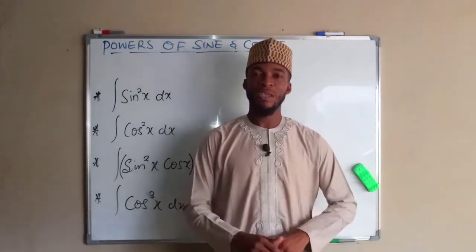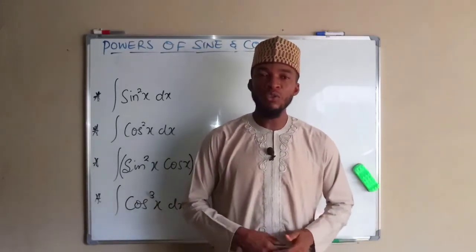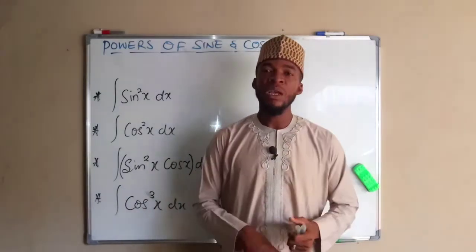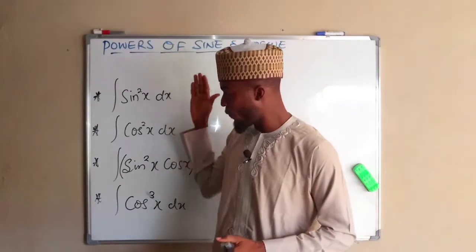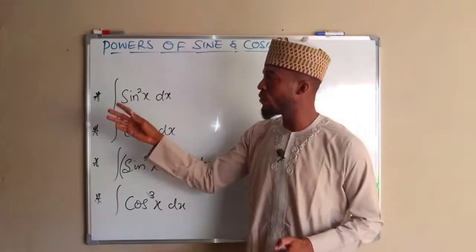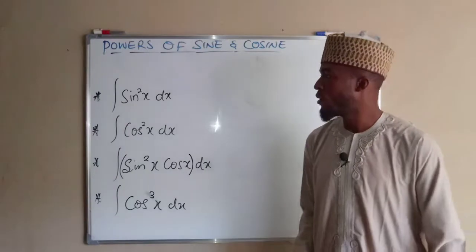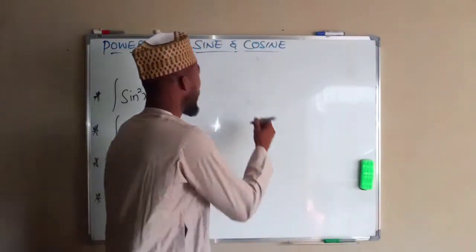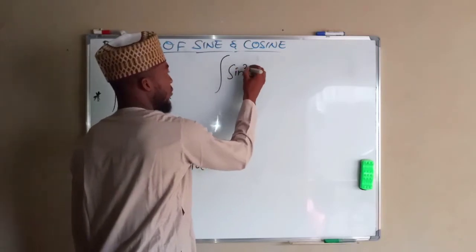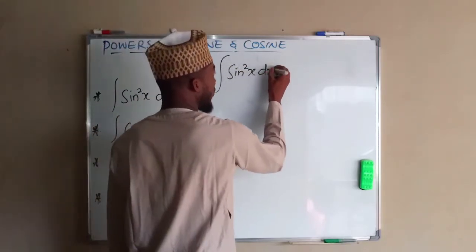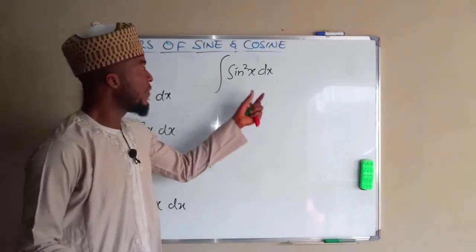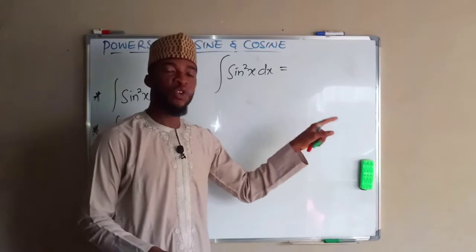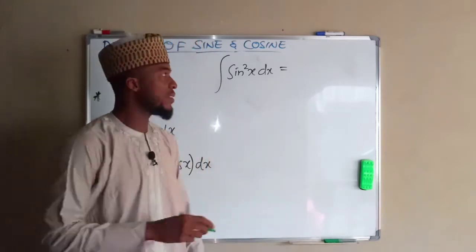Hello, good morning. In this tutorial I will show you how to integrate trigonometric functions that involve powers. I have four questions that all involve powers of sine and cosine. The first one is the integral of sine squared X with respect to X. From my previous lesson I've shown you that sine squared X can be obtained from the double angle identity.